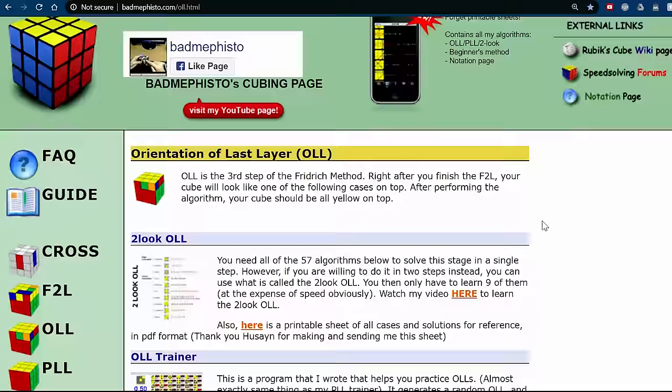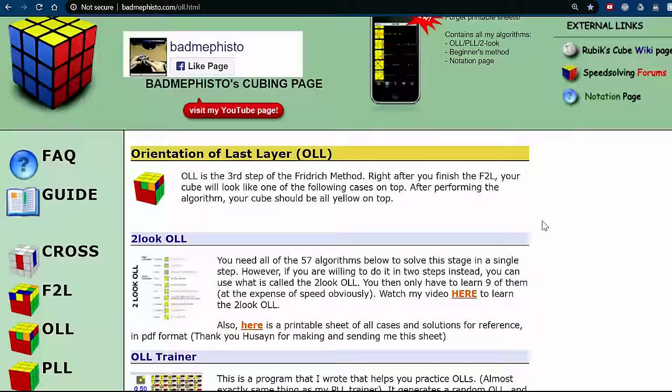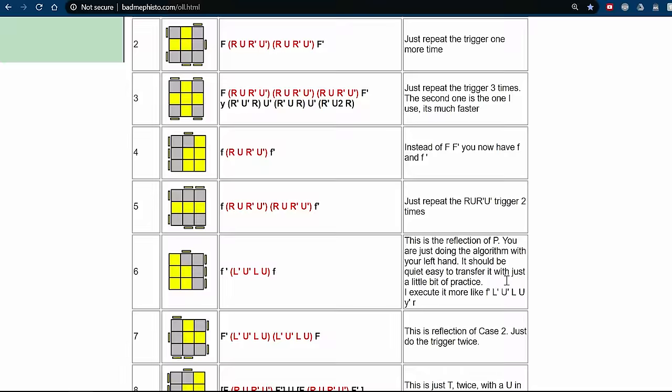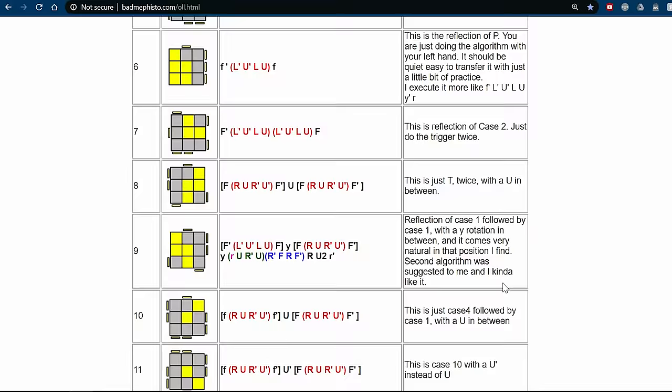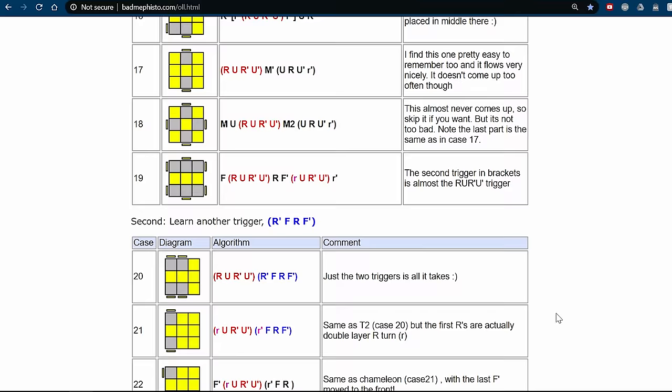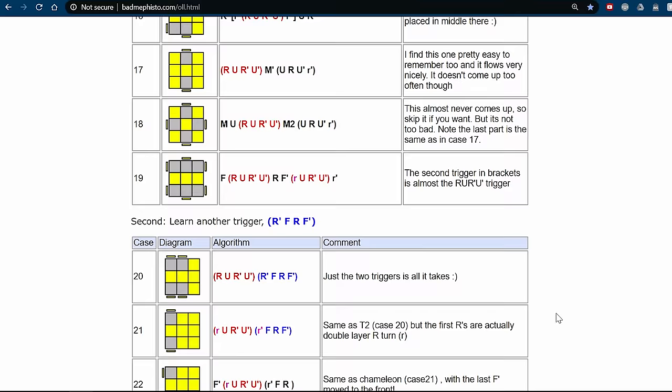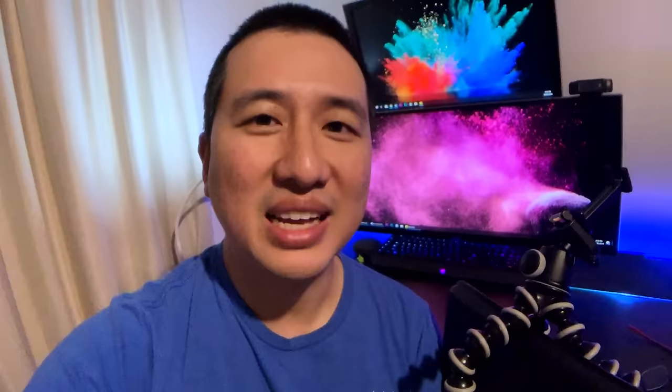About halfway through the process, I came across this page, Bad Mephisto's summary of all the OLL cases. What I really love about them are the comments that he makes on all of them. They were so helpful in helping me internalize and really understand the cases more. They weren't just like a series of moves anymore, but they were like patterns and sequences that really helped. He organizes them here really interestingly. He groups them with triggers in this progressive way. I'm not sure how that would have affected the way that I learned all the cases, but maybe you could give it a go.